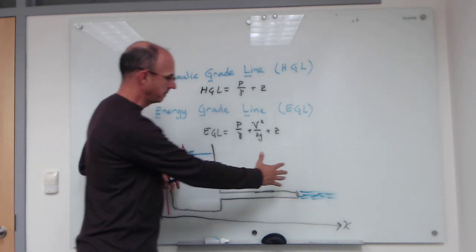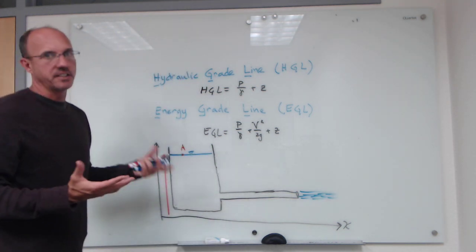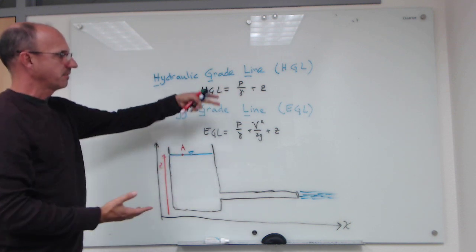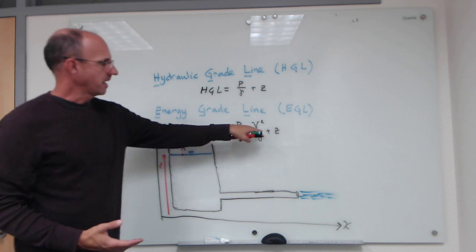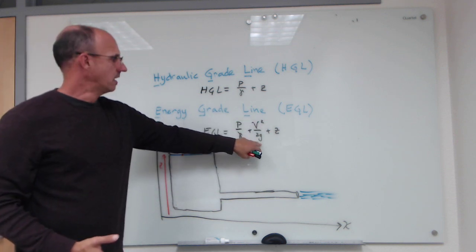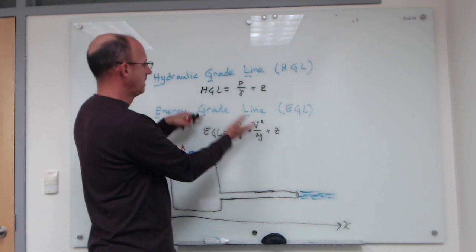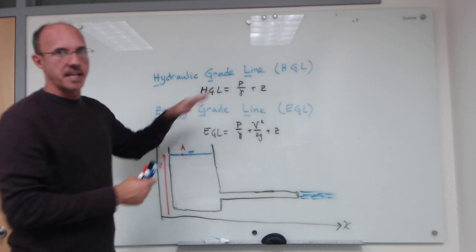Energy is basically divided into two parts: you've got your static energy, p over gamma plus z, and then you've got your kinetic energy, which is v squared over 2g. So the energy grade line captures all the energy, and the hydraulic grade line just captures that aspect of energy associated with both the pressure and the height in the system.